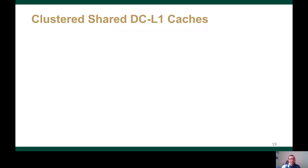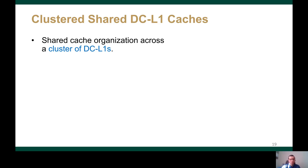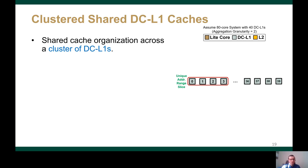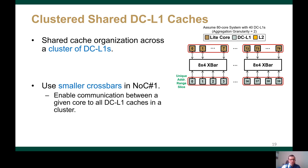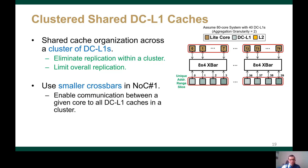To achieve that, we propose clustered shared DCL1 caches to reduce data replication across the DCL1s while managing network area and power. We apply a shared cache design across a cluster of DCL1s instead of all of them. For example, assuming an 80-core system with 40 DCL1s, we apply a shared cache organization across four DCL1s, where each DCL1 serves only a quarter of the address range. A cluster of 8 cores uses a small 8-by-4 crossbar to communicate with any of the 4 DCL1s in the cluster. Data replication is eliminated within a cluster, as shown by the unique patterns for each DCL1 in a given cluster, and overall replication across all DCL1s is reduced.